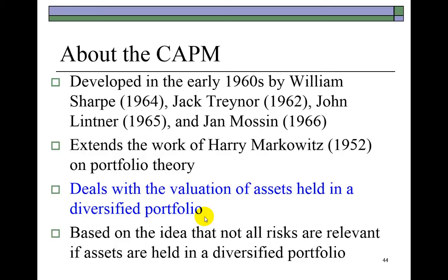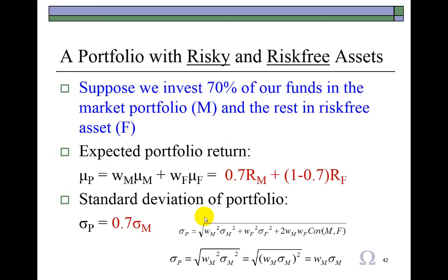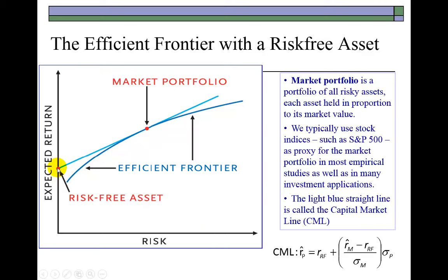This discussion proceeds from the earlier one on the capital market line, which — going back to the PowerPoint slide — is this light blue line coming from the Y-intercept, where we looked at the relationship between the expected rate of return on an efficient portfolio and the risk of that portfolio defined by this model.